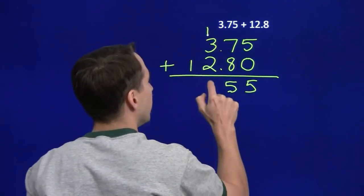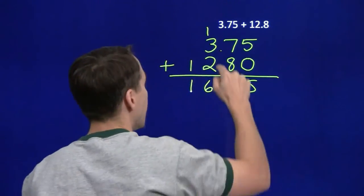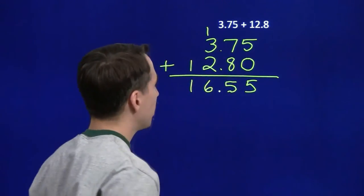And then we add 1, 3, and 2 gives us 6. And then the tens, well, that's just 10. And then we bring the decimal point down, keep it in place.